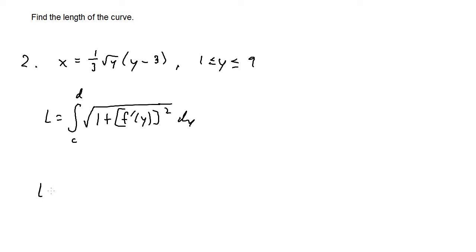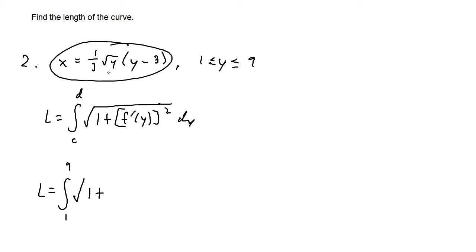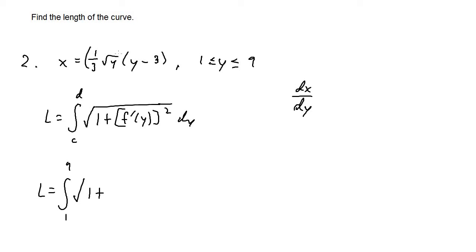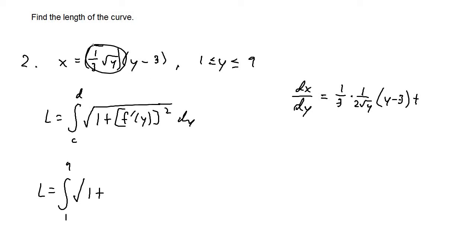Filling out the formula, the length equals the integral from 1 to 9 of the square root of 1 plus the derivative squared. To find the derivative of x with respect to y, since we have two functions multiplied together — 1 third times the square root of y, and (y minus 3) — we use the product rule. That gives: 1 third times (1 over 2 root y) times (y minus 3), plus 1 times 1 third times the square root of y.